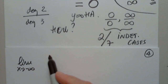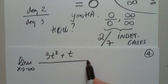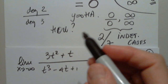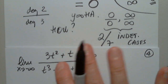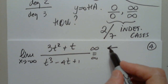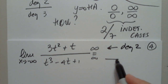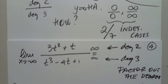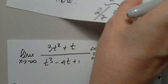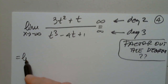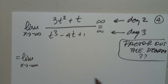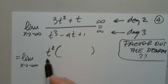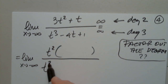Limit as t approaches negative infinity of (3t² + t) / (t³ - 4t + 1). We get infinity over infinity — the sign doesn't matter. The numerator has degree two and the denominator has degree three. We are going to factor out the leading degree from each. Do not drop the limit operator — we have not applied it yet. Since the numerator has degree two, I'm going to factor out t². Since the denominator has degree three, I'm going to factor out t³.